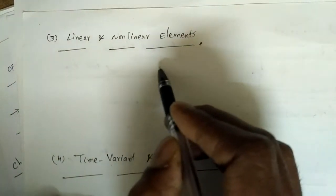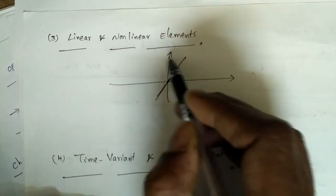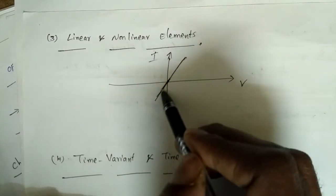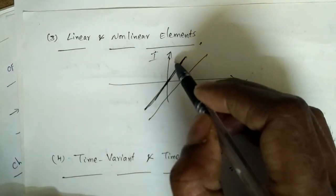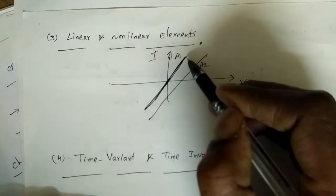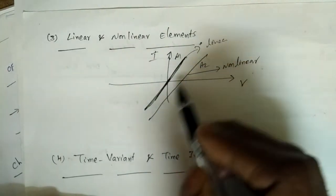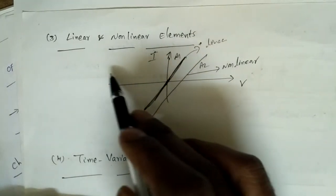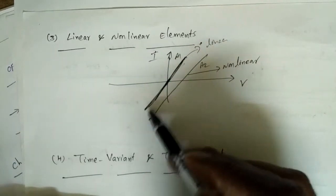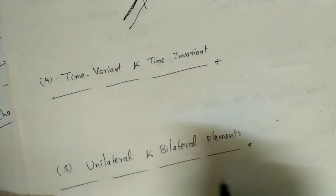A linear element has IV characteristics that form a straight line passing through the origin. If the characteristics pass through the origin as a straight line, it is linear. If the line does not pass through the origin — even if it is straight — it is non-linear. So passing through the origin with a straight line is the condition for linearity.